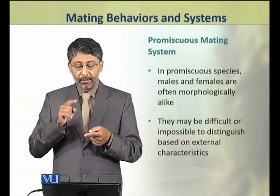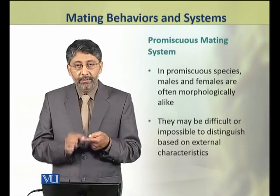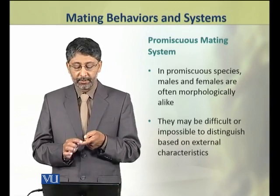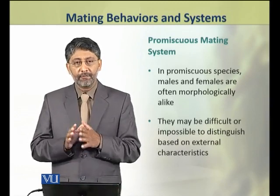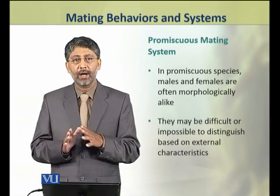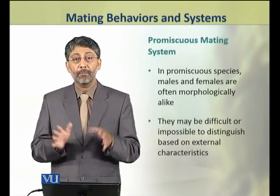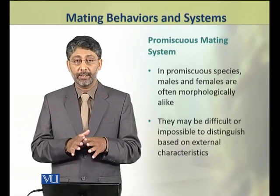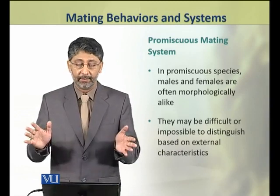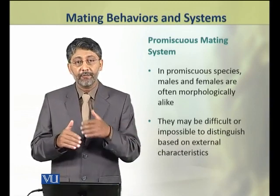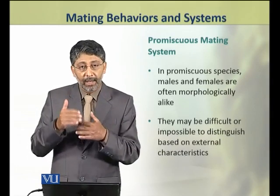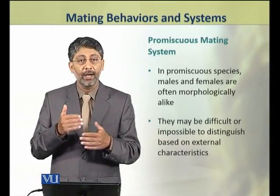In promiscuous species, males and females are often morphologically alike, meaning the difference between male and female is not apparent.